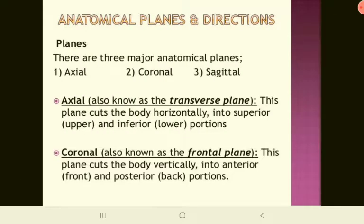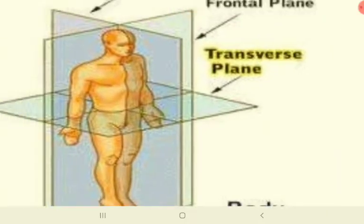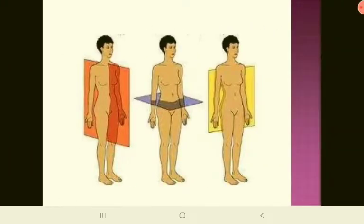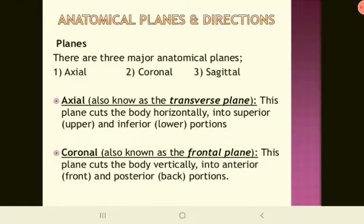The next plane is the coronal plane, also known as the frontal plane. It is called the frontal plane because it crosses over the frontal suture of the skull. This plane cuts the body vertically into anterior and posterior — that means front and back. Here you can see the frontal plane cutting the body from front to back.